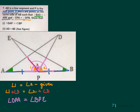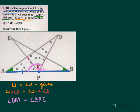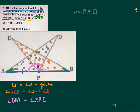Now we will work with the two triangles. We have angle DPA equal to angle DPE, which we have proved. The two triangles we need to consider are triangle PAD and triangle PBE.